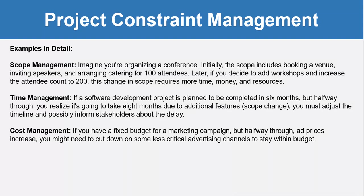For time management, if a software development project is planned to be completed in six months but halfway through you realize it's going to take eight months due to additional features — a scope change — you must adjust the timeline and possibly inform stakeholders about the delay.